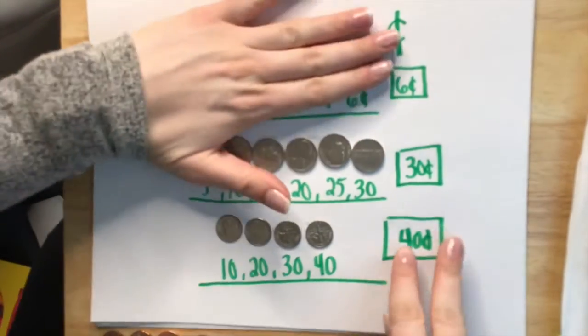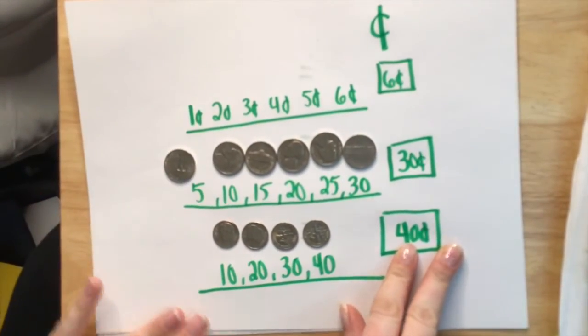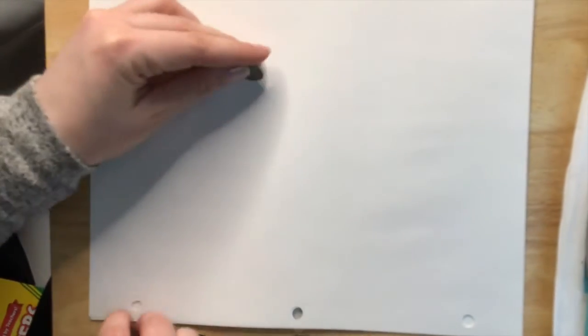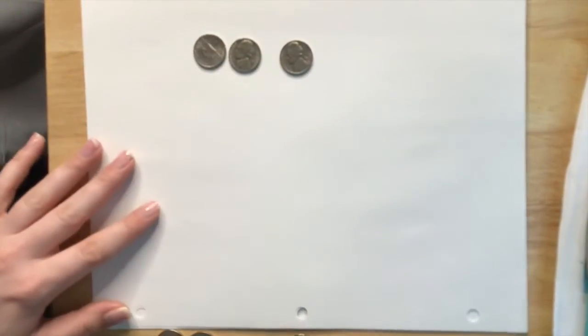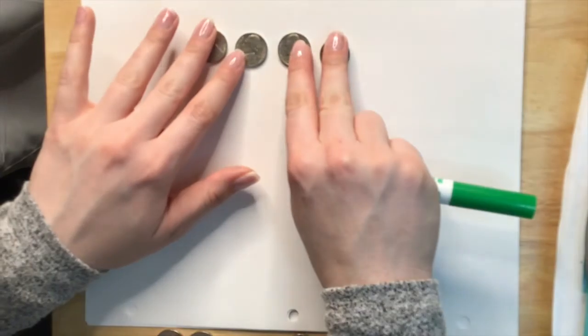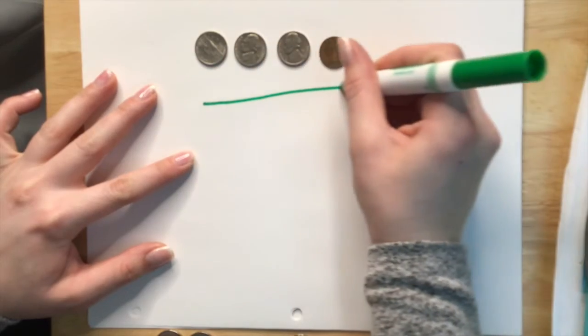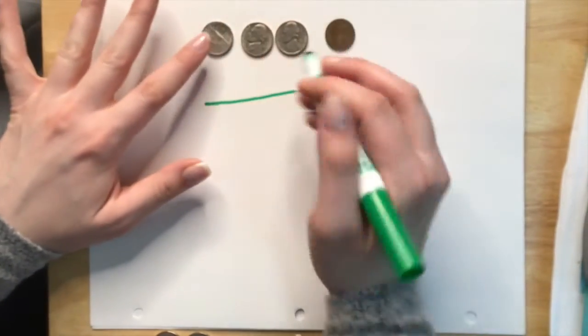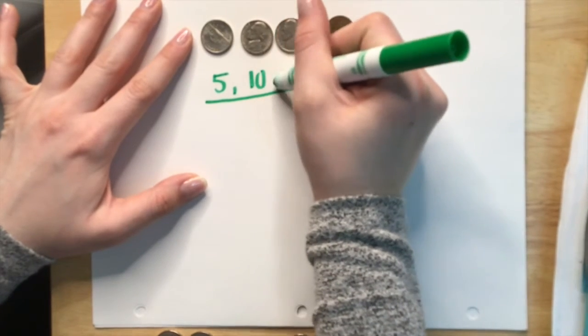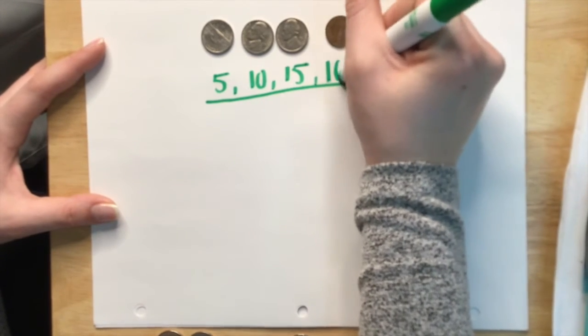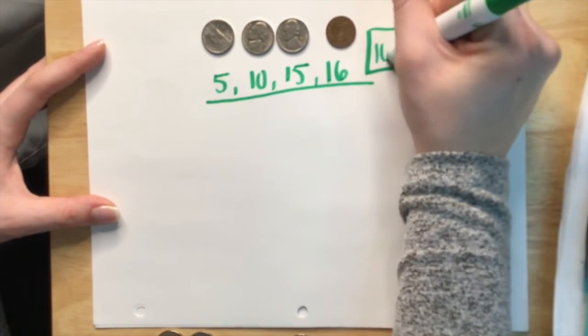So now I'm going to give you a challenge. What if we were given a couple of these different values like pennies, nickels, and dimes together? How could we count those? So I'm going to arrange a couple here. So here we have three nickels and one penny. So to count these, we would start with the nickels and we would start counting by five. So I have five, 10, 15, and then I know a penny is worth one cent. So that gives us 16, making this total 16 cents.